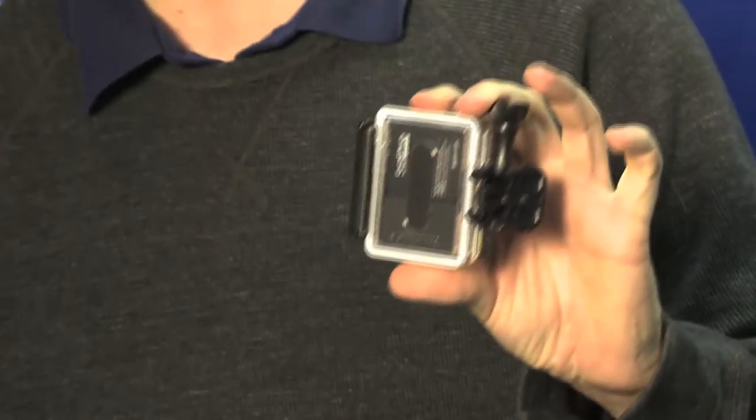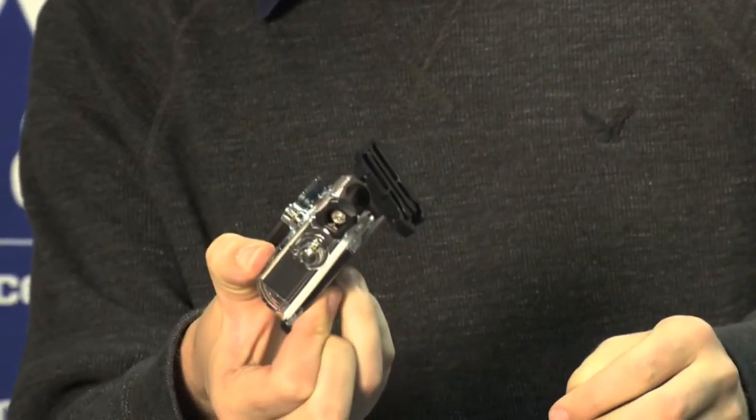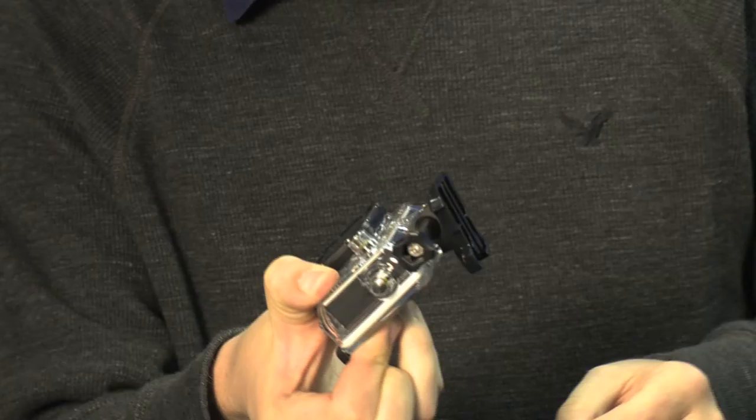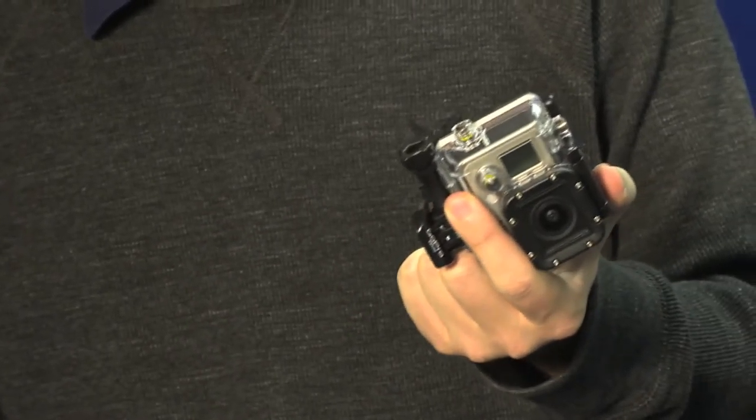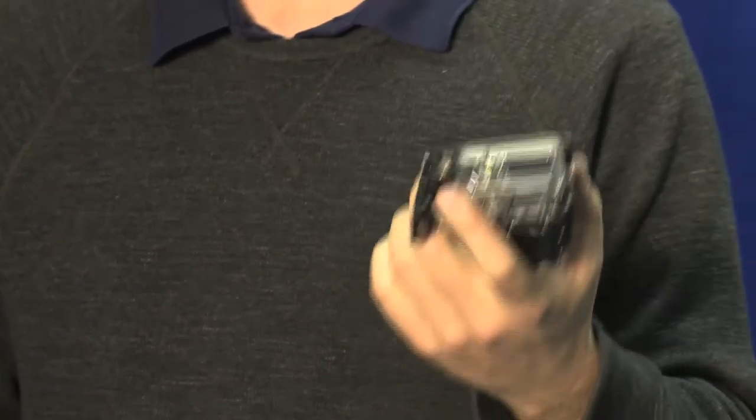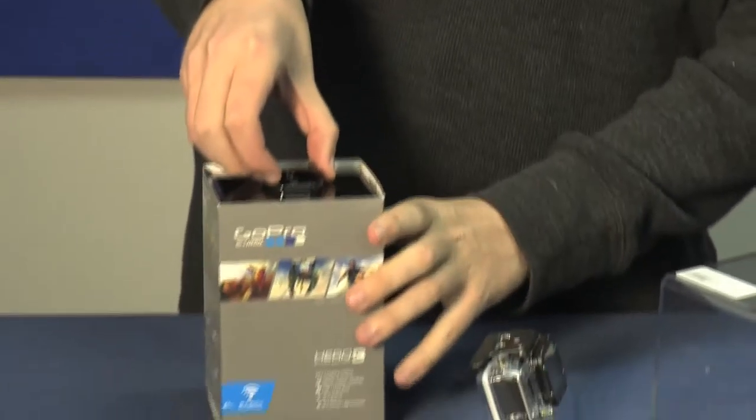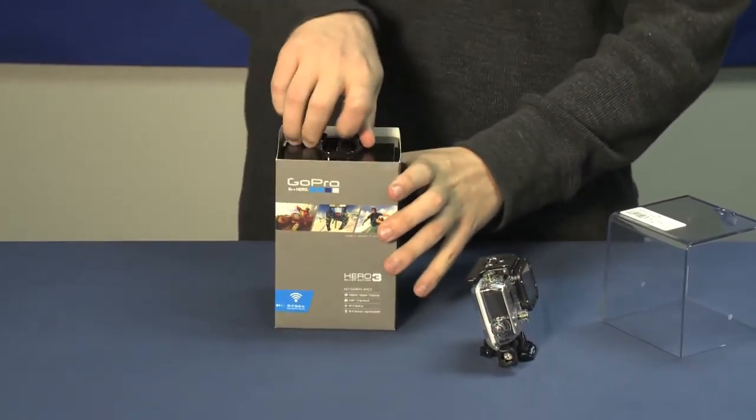What makes it unique is that it comes in a nearly indestructible waterproof case that'll keep it safe down to 197 feet underwater. It's impact resistant, shock resistant. It's one of the more durable cameras that you can buy for reasonable amounts of money.